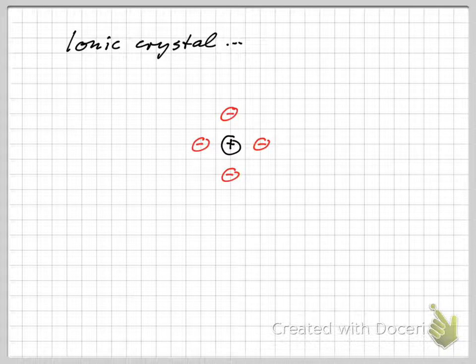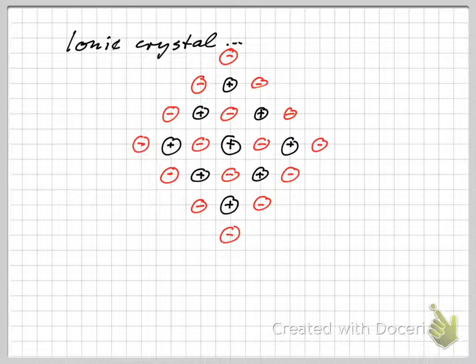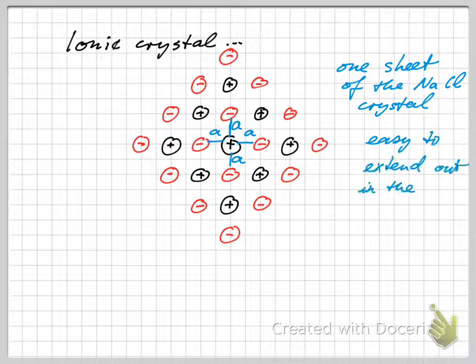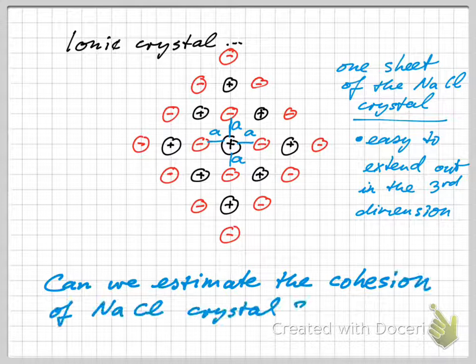It's an ionic crystal, so I have, say, starting out with a positive ion at the center here, surrounded by six negative chlorine ions. I'm showing four here, but there would also be two more in and out of this plane. And then we have surrounding that again positive sodium ions, and surrounding that negative chlorine ions and so on. The lattice constant is a. What is the cohesive energy or the cohesion of this crystal?